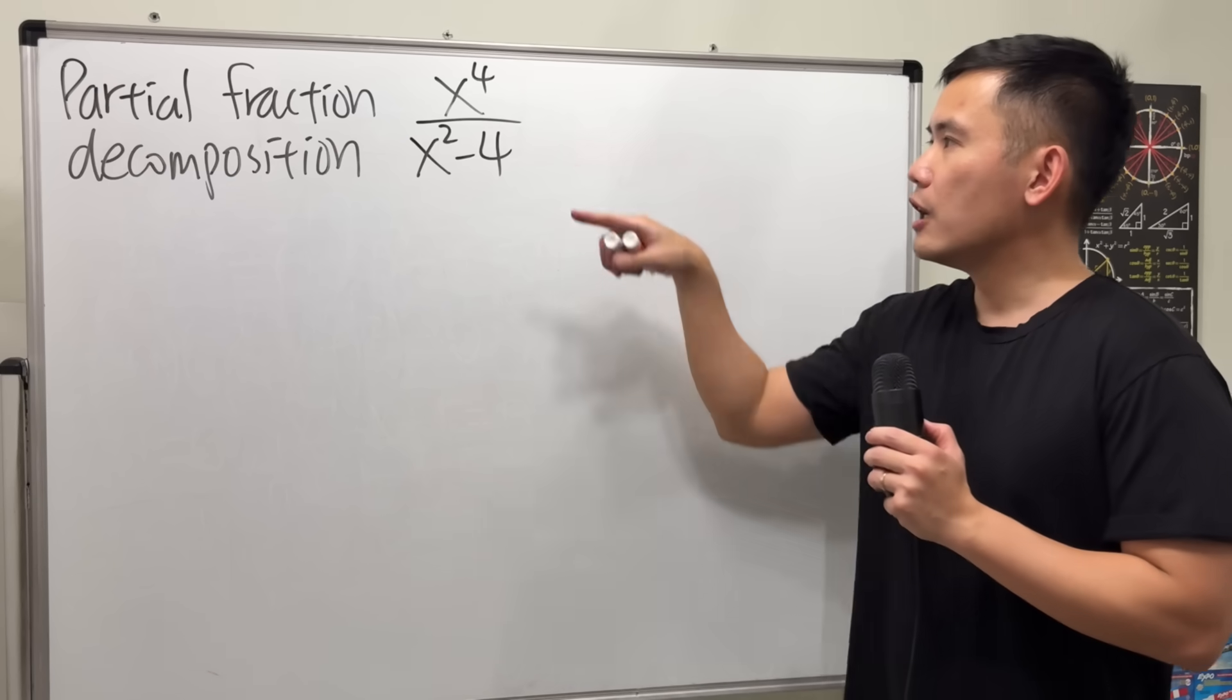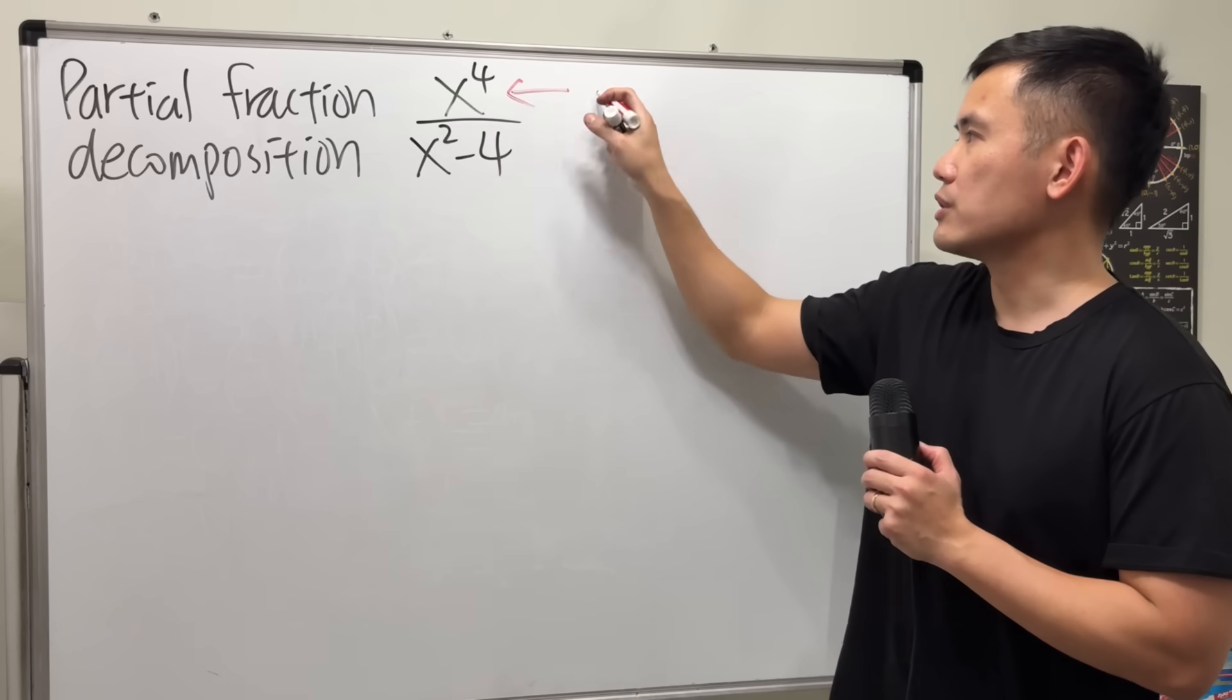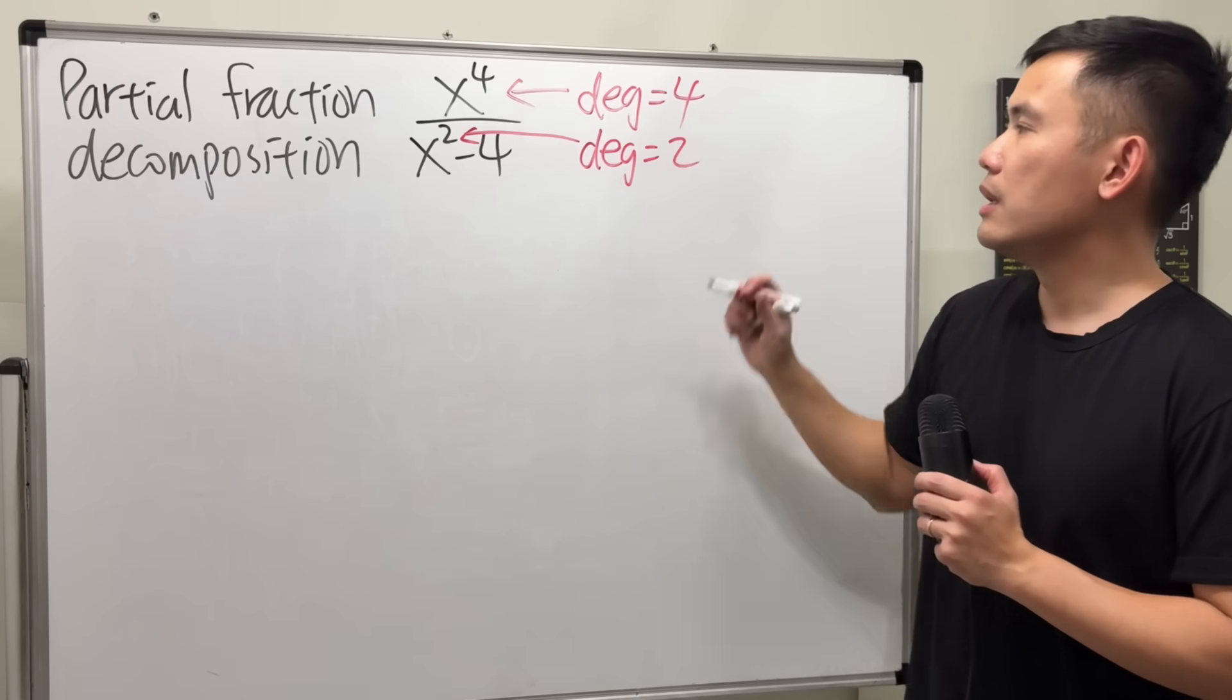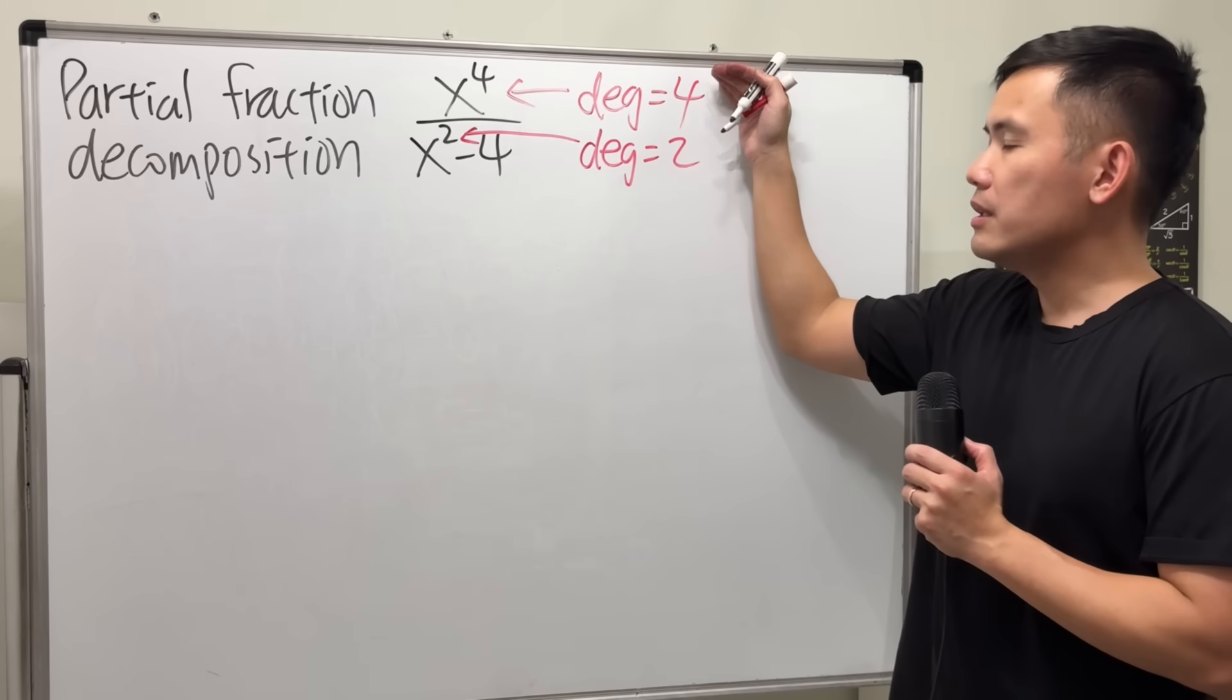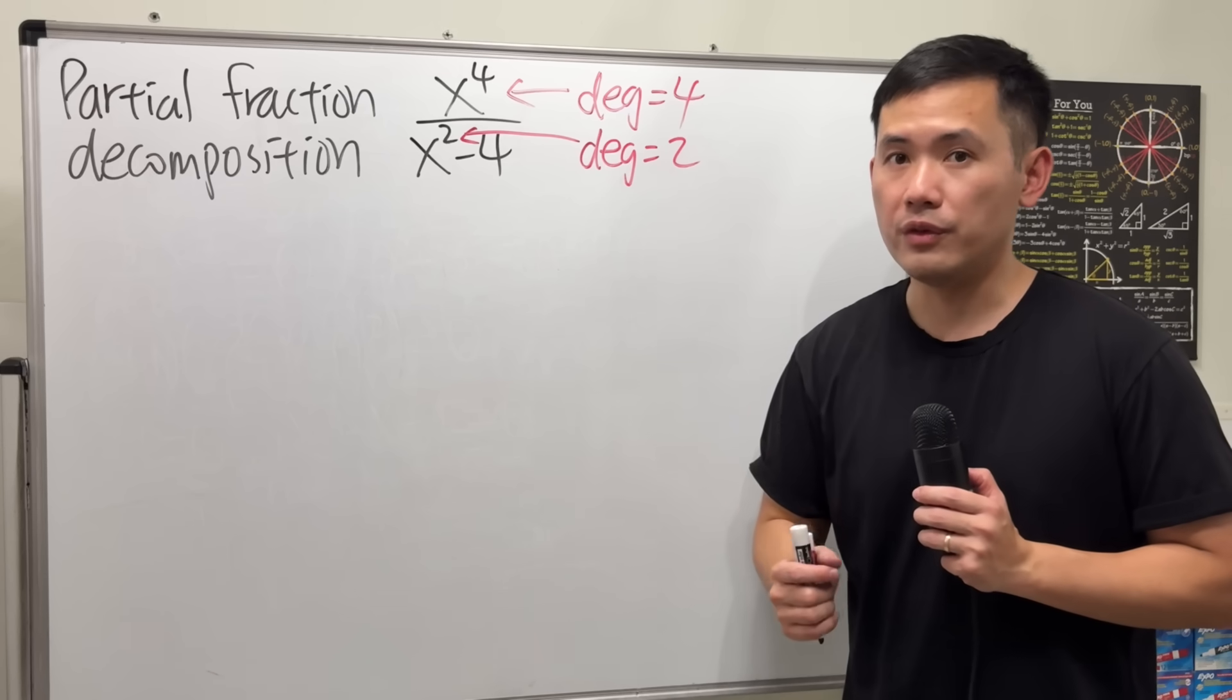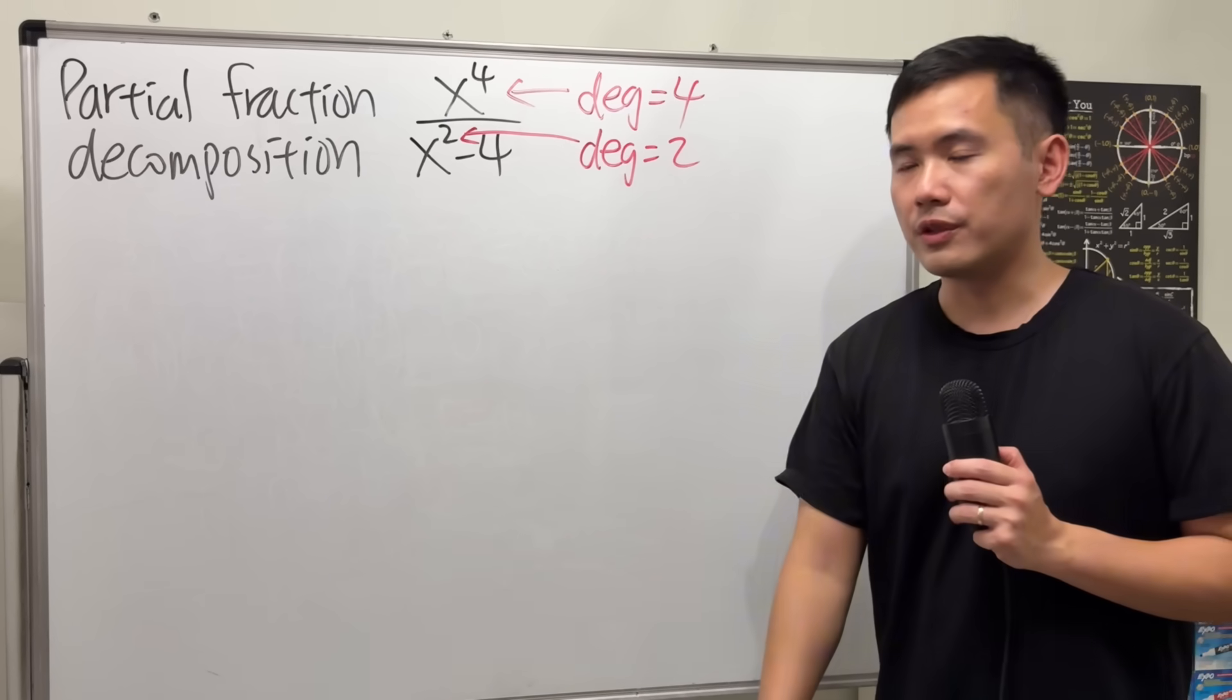First thing first, check the degree on the top and the degree on the bottom. The degree on the top is the highest power, which is just four. And the degree on the bottom is this power, which is two. Now, keep this in mind. If the degree on the top is greater than or equal to the degree on the bottom, then we will have to do polynomial long division first to break it down. So, four is greater than two, polynomial long division first.